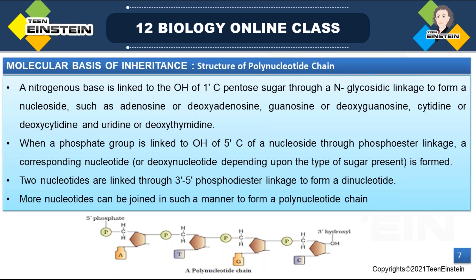Two nucleotides are linked through 3'-5' phosphodiester linkage to form a dinucleotide. More nucleotides can be joined in the same manner to form a polynucleotide chain.